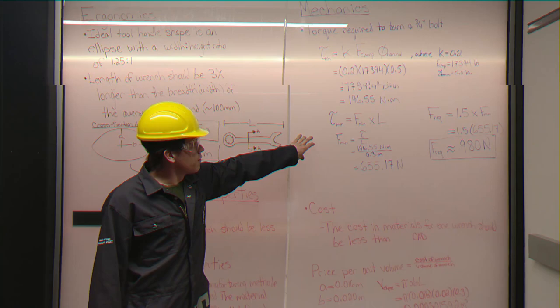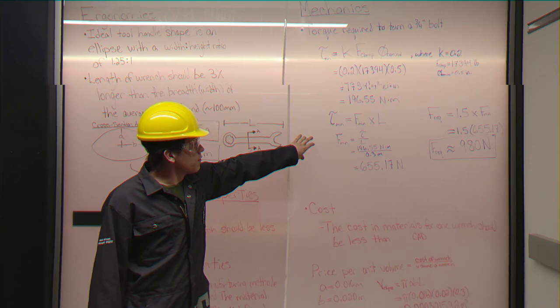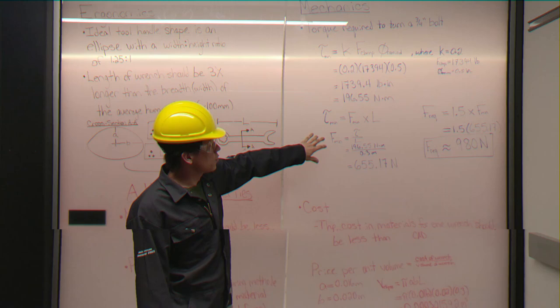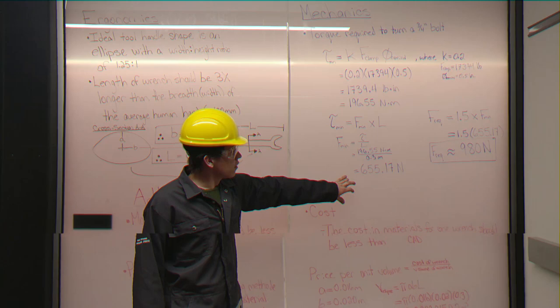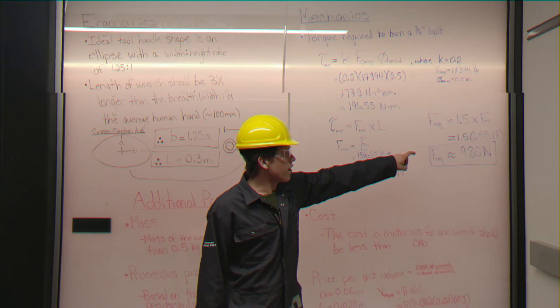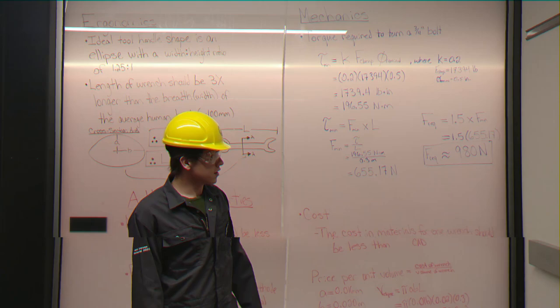Now we want to find the minimum force required to turn this bolt, which, from a different torque equation, we can rearrange and divide the found minimum torque by our constrained length, which is 0.3 meters. And this is found to be roughly 650 newtons. We want to add in a safety factor of 1.5, which then will give us that our required force that the wrench needs to withstand is 980 newtons.